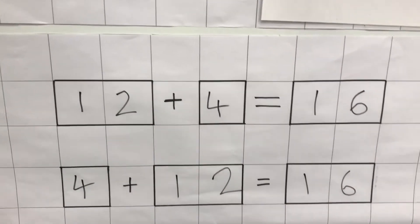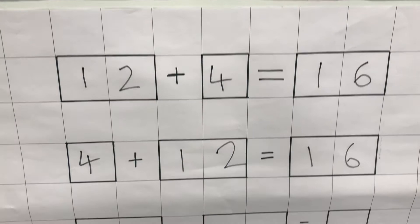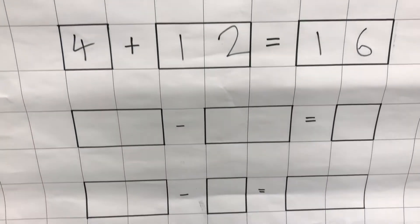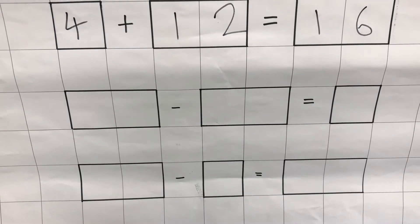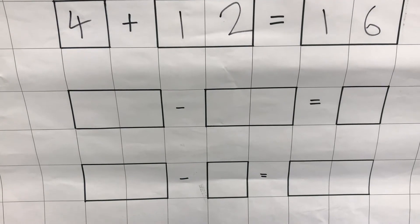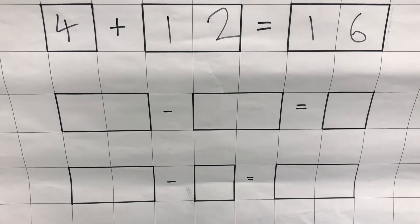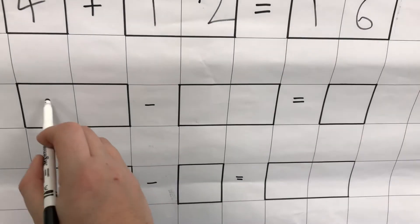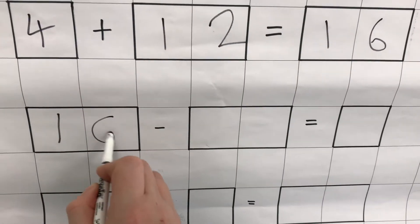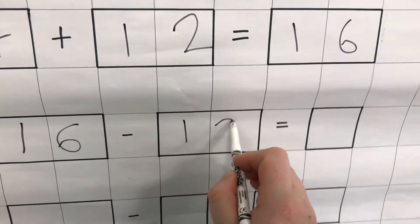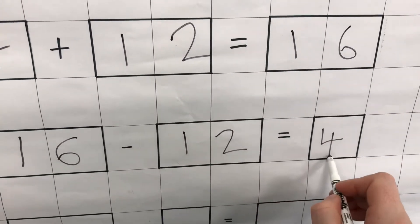I can also use these three numbers to write a subtraction. Now we know that when we're subtracting, the number we start with has to be the biggest number, and our answer will always be smaller than the number we started with. So I'm going to start with my biggest number, 16, and I'm going to take away 12. And my answer will be 4.